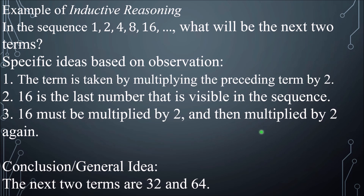Next, 16 is the last number visible in the sequence — that is another specific idea. So 16 must be multiplied by 2, and then multiplied by 2 again, because that's the pattern. After gathering these ideas, we arrive at the conclusion that the next two terms are 32 and 64. That is the general idea, coming from the specific ideas based on observation. That is inductive reasoning.